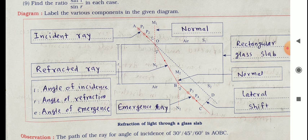Remove the glass slab and draw the normal M1, N1 at the point O. Draw the line AO which makes the angle of incidence I of 30 degrees with normal M1, N1. Fix the pins P1, P2 on the line AO such that the pins are vertical and well separated. Place the glass slab properly in its original position.